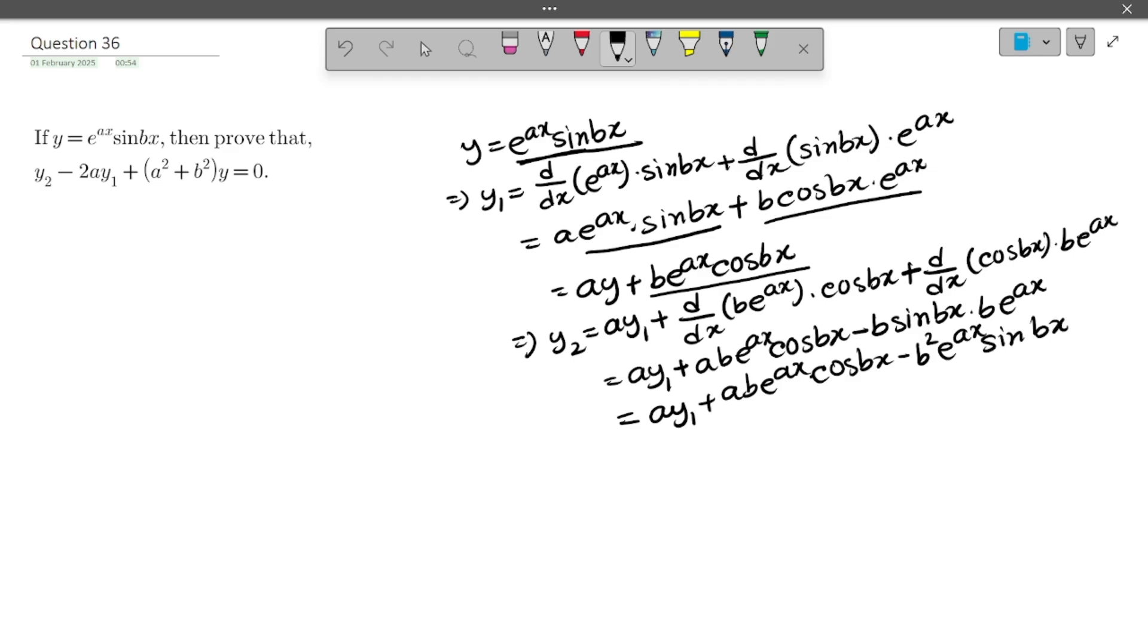Now there is something to notice here. Firstly, y₁ equals ay plus b into e to the power ax cos bx. So from here you can say that b e to the power ax cos bx will be y₁ minus ay. So you will use this result.